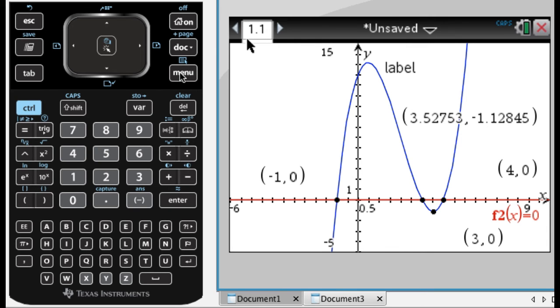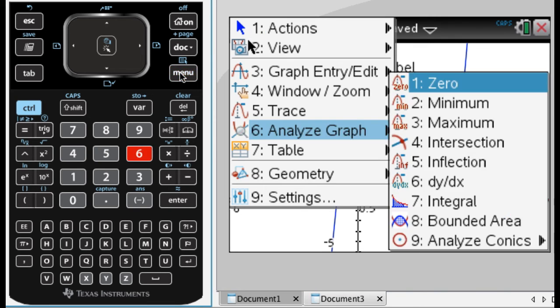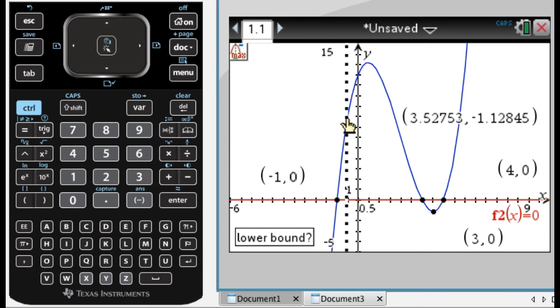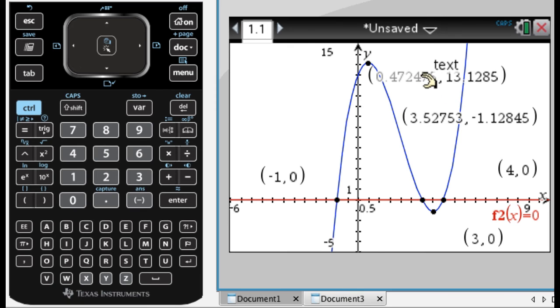So that would be the minimum, and then maximum virtually identical. So it's going to be menu, 6, and then 3 for maximum. Click the graph, a little to the left of it, drag until you get to the right of it, click again, and there you go.